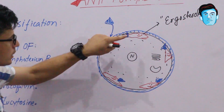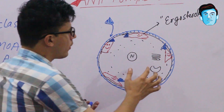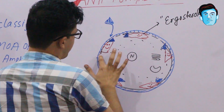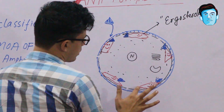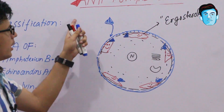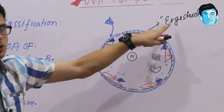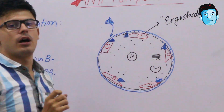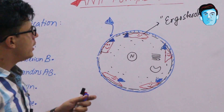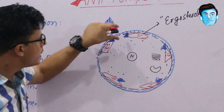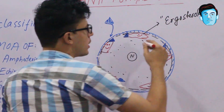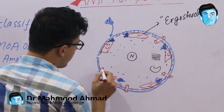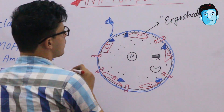When amphotericin B binds to the ergosterol, it creates two important effects on the fungal cell membrane: either it creates some sort of pores in the fungal cell membrane, or it creates specialized channels in the fungal cell membrane — but not in the fungal cell wall.